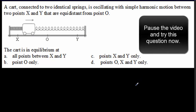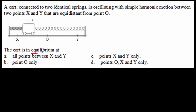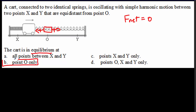For the next IB question about a cart on springs: if the cart is at equilibrium, the net force must be zero. With the cart at the center, both identical springs are stretched and pull in opposite directions with equal forces, so those forces cancel out. This means point O is where there is no net force, and that is the equilibrium point.